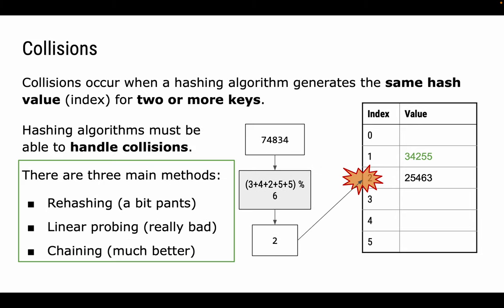There are three main approaches to handling collisions: rehashing, which is somewhat limited; linear probing, which is a really bad approach; and chaining, or linear chaining, which is a lot better. Note that rehashing is the method the AQA spec says you need to understand, while the other two are not explicitly on the spec but will always earn marks if described as a means of dealing with a collision.